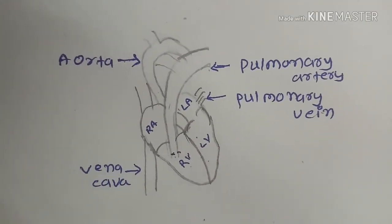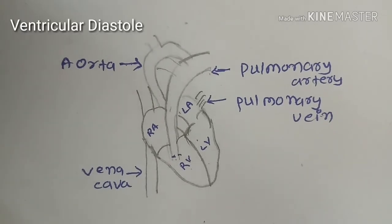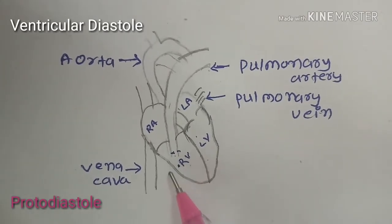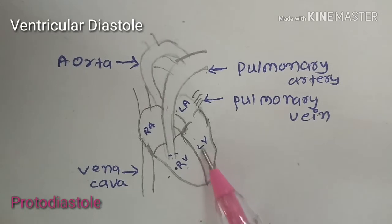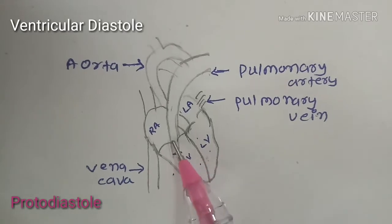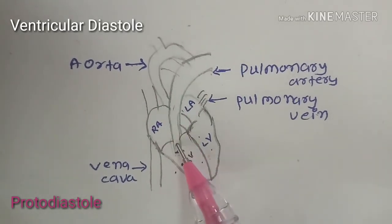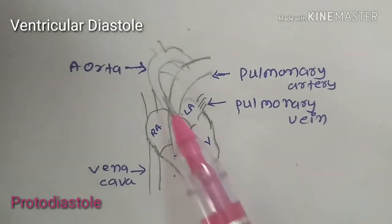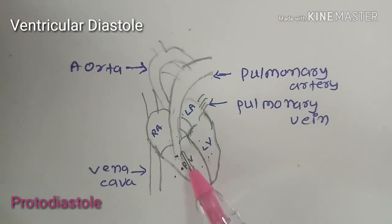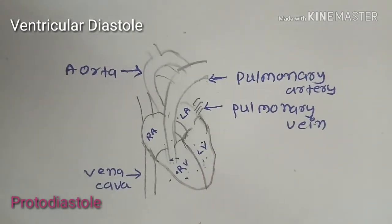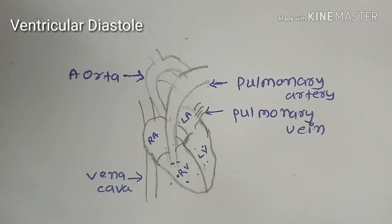The next phase is ventricular diastole, which has four phases. The first is protodiastole. As the ventricular contraction process gets over, the ventricle starts relaxing, causing a decrease in intraventricular pressure. When ventricular pressure becomes less than the pressure of the vessels — right ventricular pressure less than pulmonary artery pressure and left ventricular pressure less than aortic pressure — there will be closure of the semilunar valves. Closure of these valves produces the second heart sound.